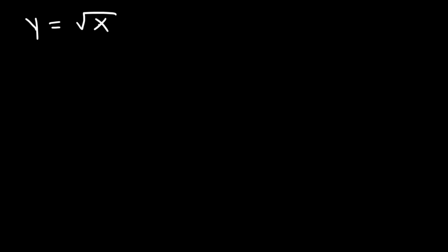In this video we're going to focus on graphing radical equations. Let's start with the parent function y is equal to the square root of x. This graph starts at the origin and it increases at a decreasing rate.